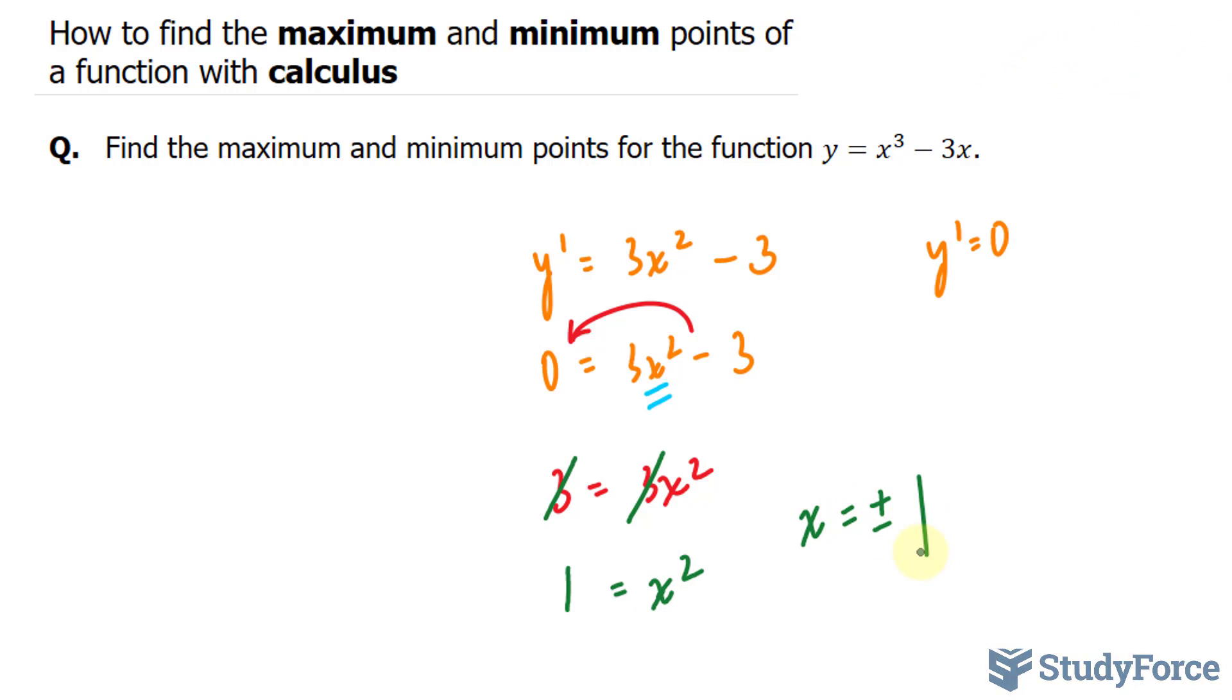Now to find out the maximum and minimum points, what we have to do is evaluate the derivative at points that are less than negative 1, in between negative 1 and 1, and points that are greater than 1.